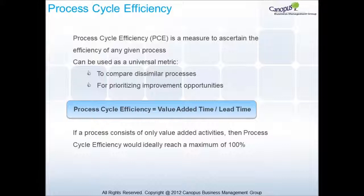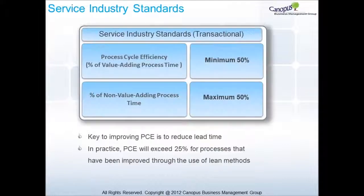Process cycle efficiency is equal to value-added time divided by lead time. If a process consists of only value-added activities, then the process cycle efficiency would ideally reach a maximum of 100%. Here are some typical process cycle efficiencies in the service sector.